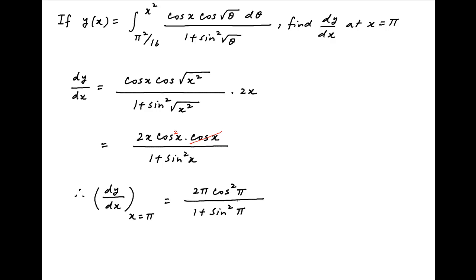Now cos π is equal to minus 1 and sine π is equal to 0. Therefore this simplifies to 2π times minus 1 squared divided by 1 plus 0. This is equal to 2π which is the required answer.